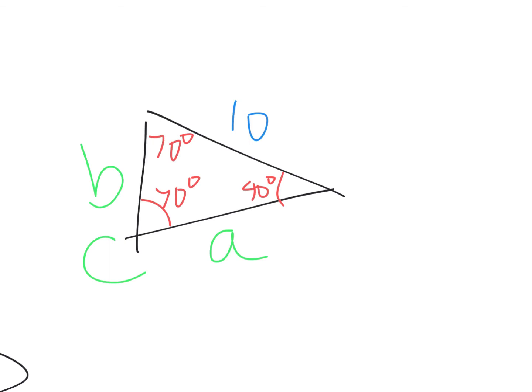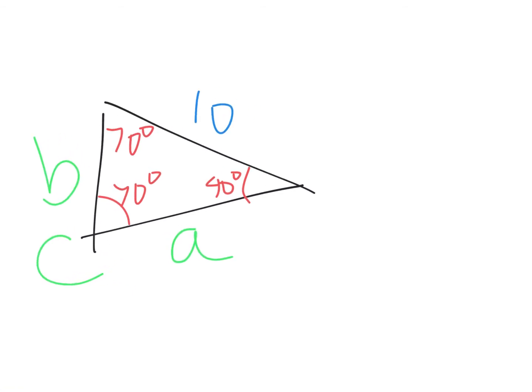Let's find side A using the Law of Sines. If two angles are both 70°, then the sides across from them are equal — that's an old geometry rule. So: A over sine of 70 equals 10 over sine of 70. If two angles are the same, the sides across from them are the same, so A equals 10. You could have done a bunch of multiplying, but stepping back and thinking about it gives you the answer directly.